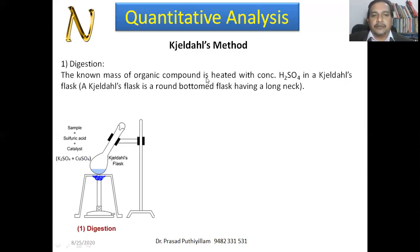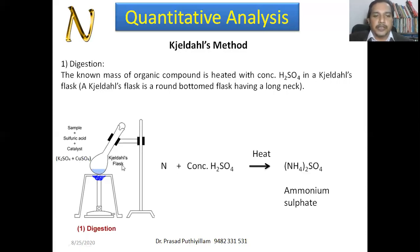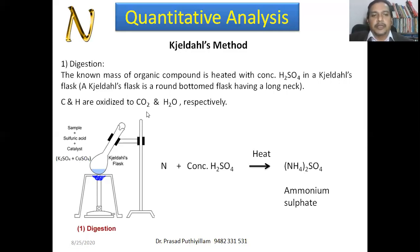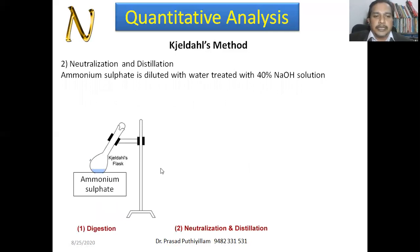This is done in a Kjeldahl flask — a round-bottom flask with a long neck. In the reaction, nitrogen present in the organic compound combines with concentrated sulfuric acid on heating to become ammonium sulfate, (NH₄)₂SO₄. Any carbon or hydrogen present is converted into carbon dioxide gas or steam, which escapes through the glass bead or glass stocker at the end of the Kjeldahl flask. Nitrogen is thus converted into ammonium sulfate.